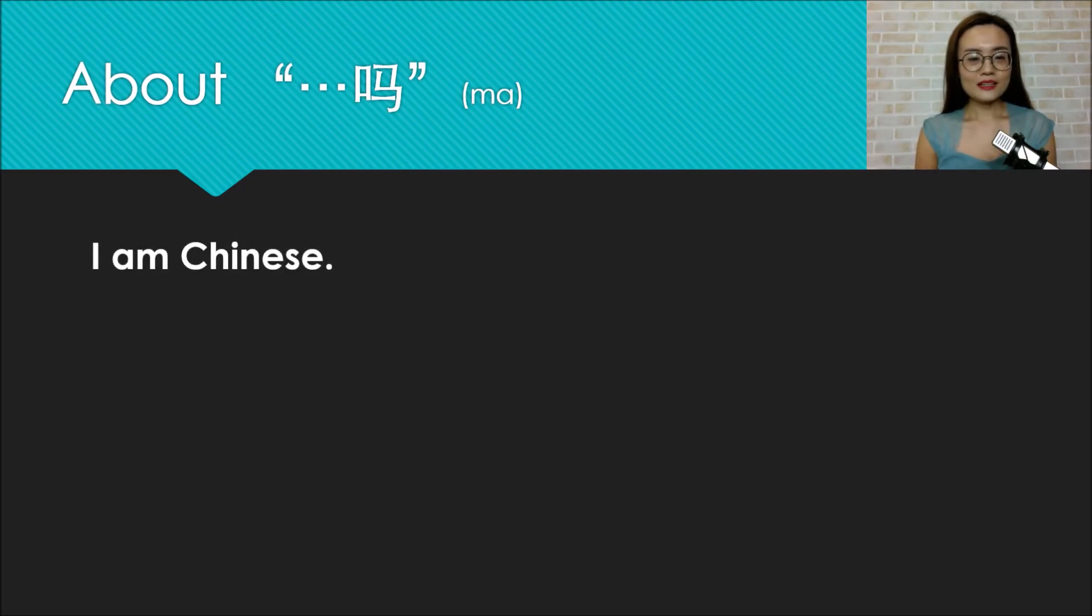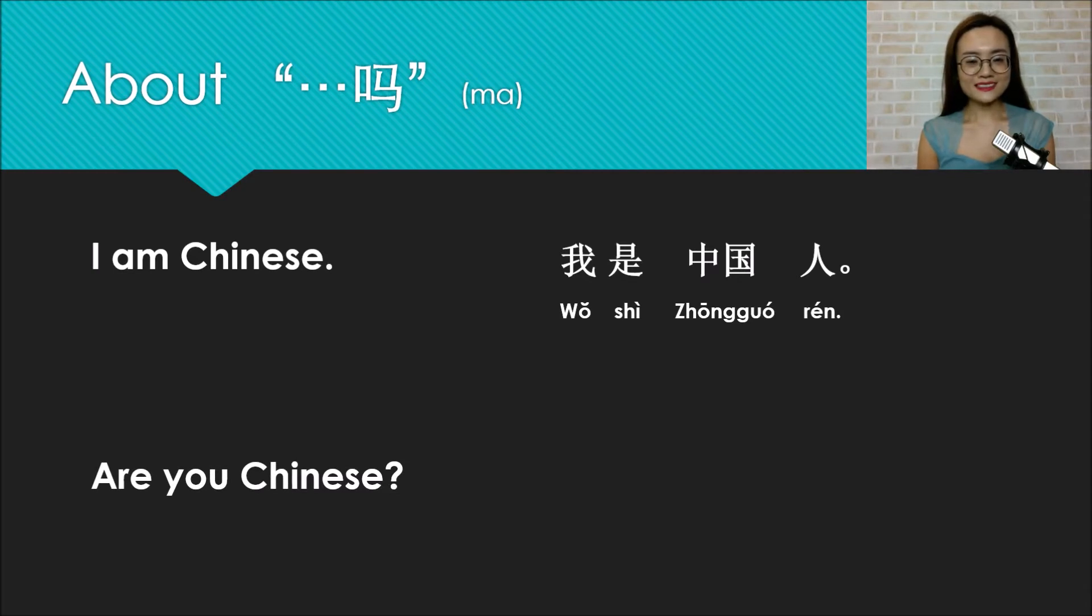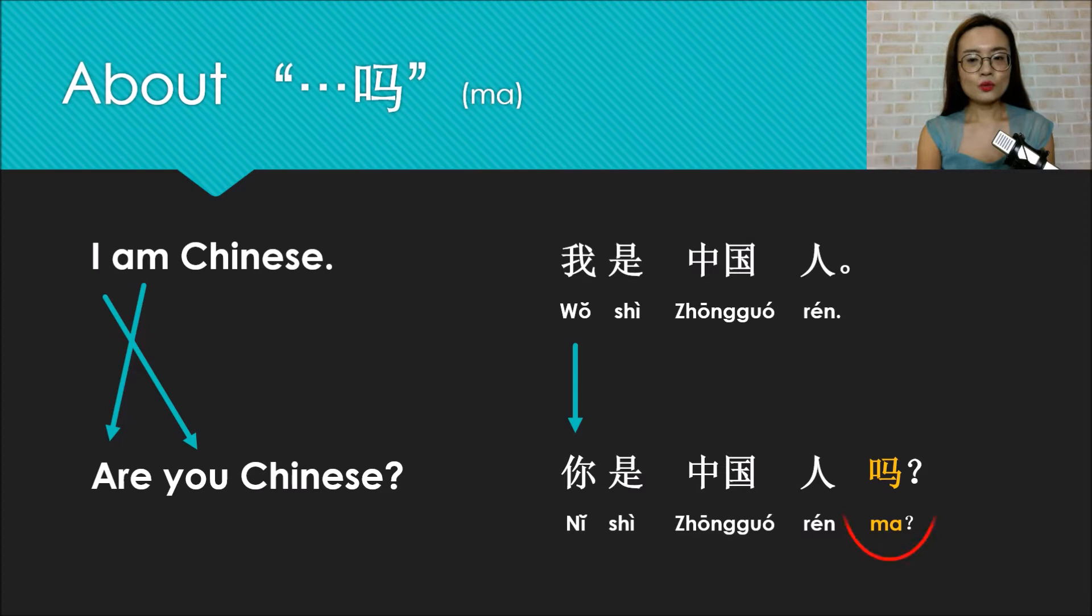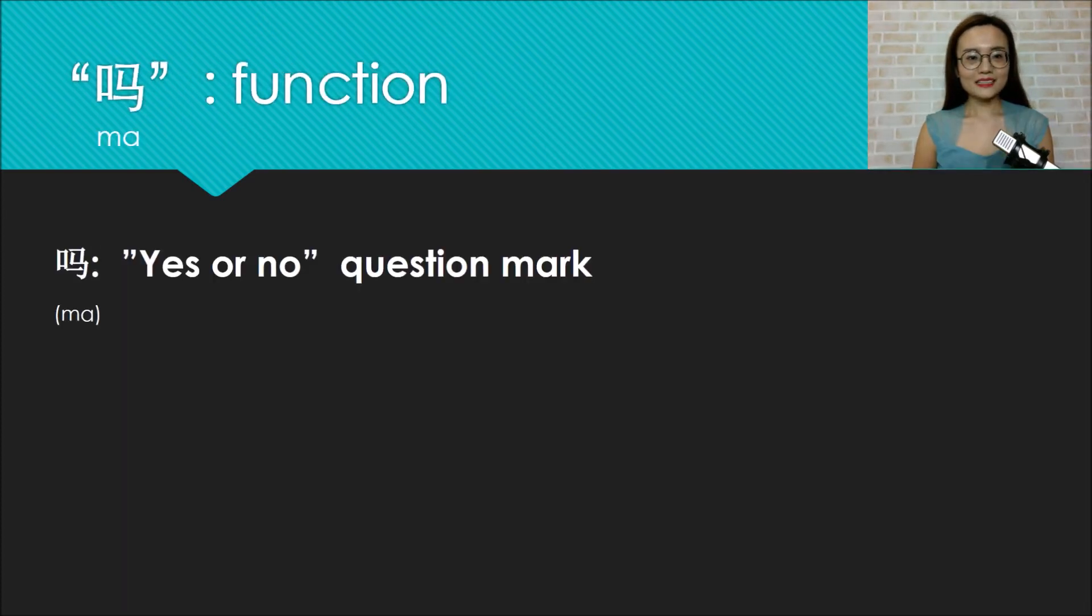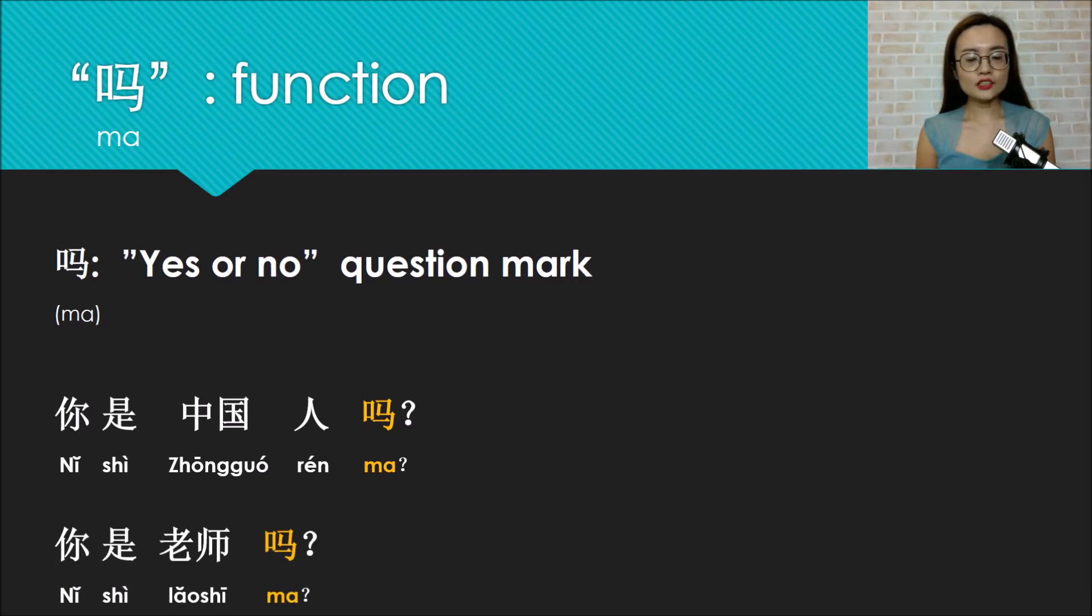Let's take a look at another example. Look at this sentence: I'm Chinese - wo shi zhongguo ren. How do you ask are you Chinese? Remember, we don't need to change the positions of subject and verbs, just change the subject wo (I) to ni (you) and then plus the question mark ma in the end. So ni shi zhongguo ren ma. Now we can know that ma is a yes or no question mark, so when someone asks questions like ni shi zhongguo ren ma or ni shi laoshi ma, you can just answer yes or no.